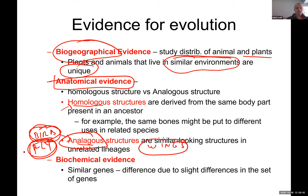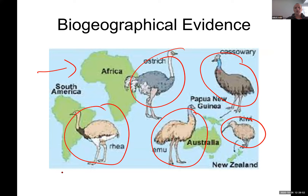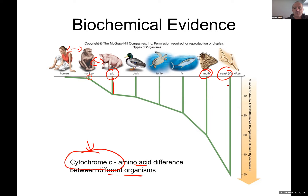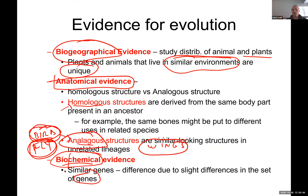Another evidence of evolution is biochemical — you look at the genes. For example, cytochrome c, which is part of the mitochondria: when you look at the amino acid differences between different organisms, human vs. monkey shows only a couple of differences. Human vs. pig shows way more differences. Human vs. moth or yeast shows almost complete difference. The more differentiation at the biochemical level — at the gene level — the more different we are.